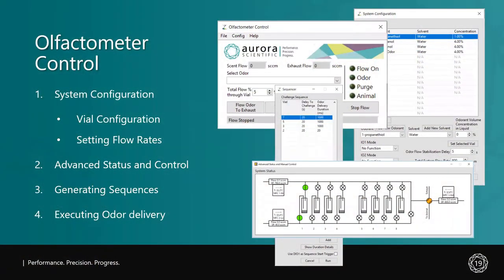You've learned about how the system works and how to configure it to meet your unique needs, but how do you actually control and deliver odor stimuli? Follow along as I demonstrate our olfactometer control software module, where you can configure each odor vial and set flow rates to deliver precise concentrations. You can also track the status of your delivery system with the advanced status window, which shows a virtual representation of your system in real time. In addition, you will learn how to generate defined or random sequences of odor challenges and execute them.